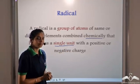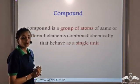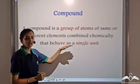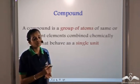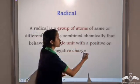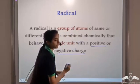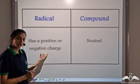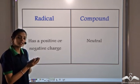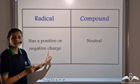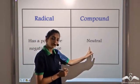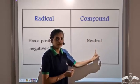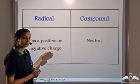This sounds a little familiar — where have we heard this before? A compound is also defined as a group of atoms of same or different elements combined together that act as a single unit. So what's the difference between a radical and a compound? In radicals, there is a positive or negative charge, whereas compounds are neutral in character. So radicals have an overall positive or negative charge, and compounds are neutral.